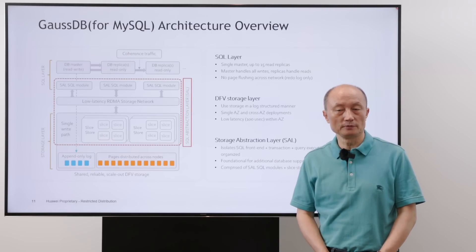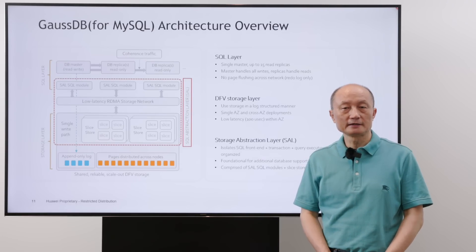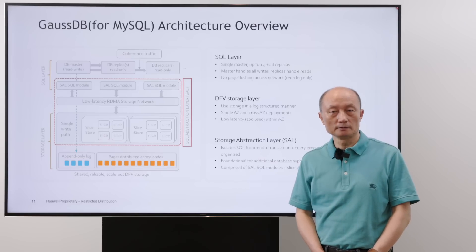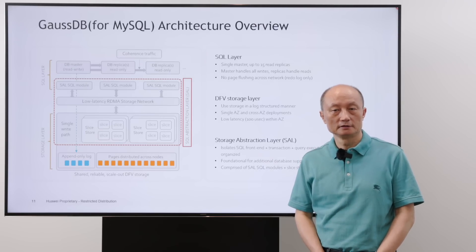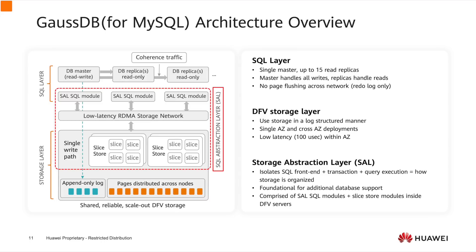Let's look at GaussDB architecture. Based on the design principles, the whole system consists of three layers. The top layer is the SQL layer — it handles transaction and query processing, with a single master and up to 15 read replicas. The master handles writes and the replicas handle reads, with no page flushing across the network. The bottom is the DFA storage layer, based on Huawei's new-generation block storage. It has low latency, fast data paths, and a pluggable architecture.